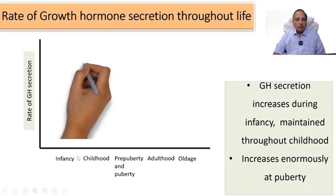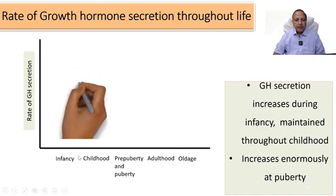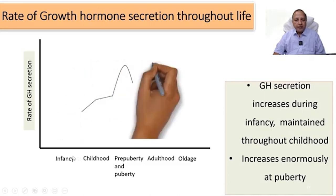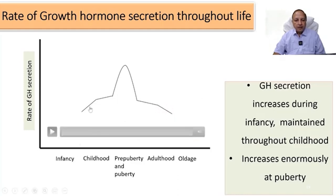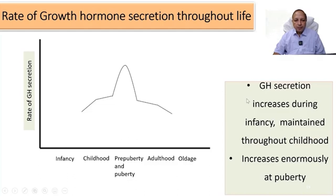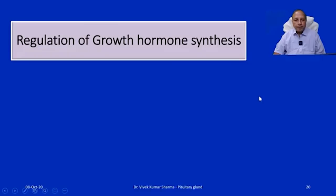Regarding the rate of growth hormone secretion throughout life, the level keeps rising from infancy through childhood, pre-puberty, and puberty, with a slight decrease during old age. The peak occurs during the pubertal period. Growth hormone is responsible for the growth and development of the body during puberty.